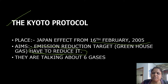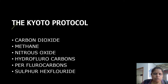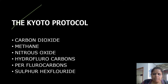The Kyoto Protocol addressed 6 greenhouse gases: Carbon Dioxide, Methane, Nitrous Oxide, Hydrofluorocarbons, Perfluorocarbons, and Sulphur Hexafluoride. These 6 gases are important to remember. The first four are especially important for exam questions, though all six are mentioned in the protocol.